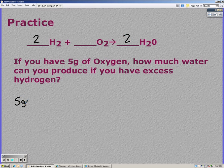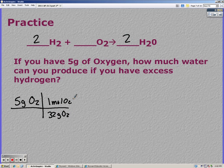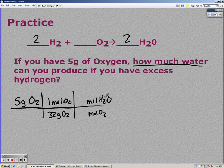We have five grams of oxygen. Remember that oxygen is diatomic. So 32 grams of oxygen equals one mole. Looking at my balanced equation, I'm going from moles of oxygen to moles of water. Two waters for every one oxygen.